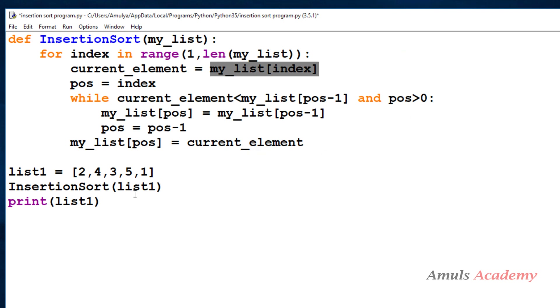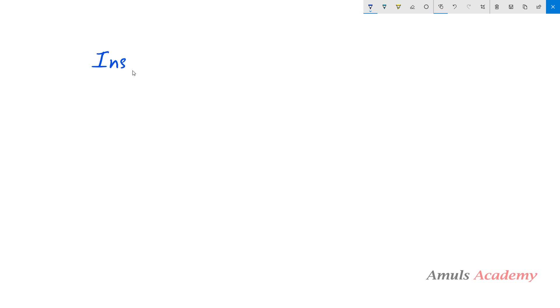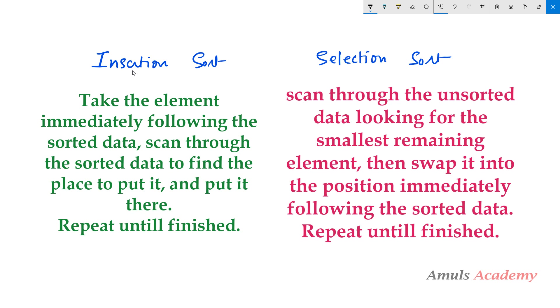Many people confuse insertion sort and selection sort. In selection sort, we find the minimum or maximum value first and place it at the beginning or end of the list. In insertion sort, we take the first element as the sorted part, then take elements from the unsorted part one by one and place them at the correct index. That's the difference between the two algorithms. That's it for now — thank you for watching, don't forget to subscribe, and I'll see you in the next class.